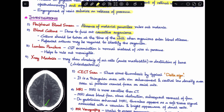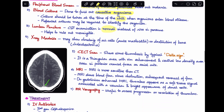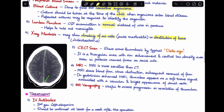Third, a lumbar puncture and CSF examination is performed. CSF is mostly normal except for a rise in pressure. This also helps to rule out meningitis. X-ray mastoid will show clouding of air cells as in mastoiditis, or evidence of bone destruction if cholesteatoma is present.